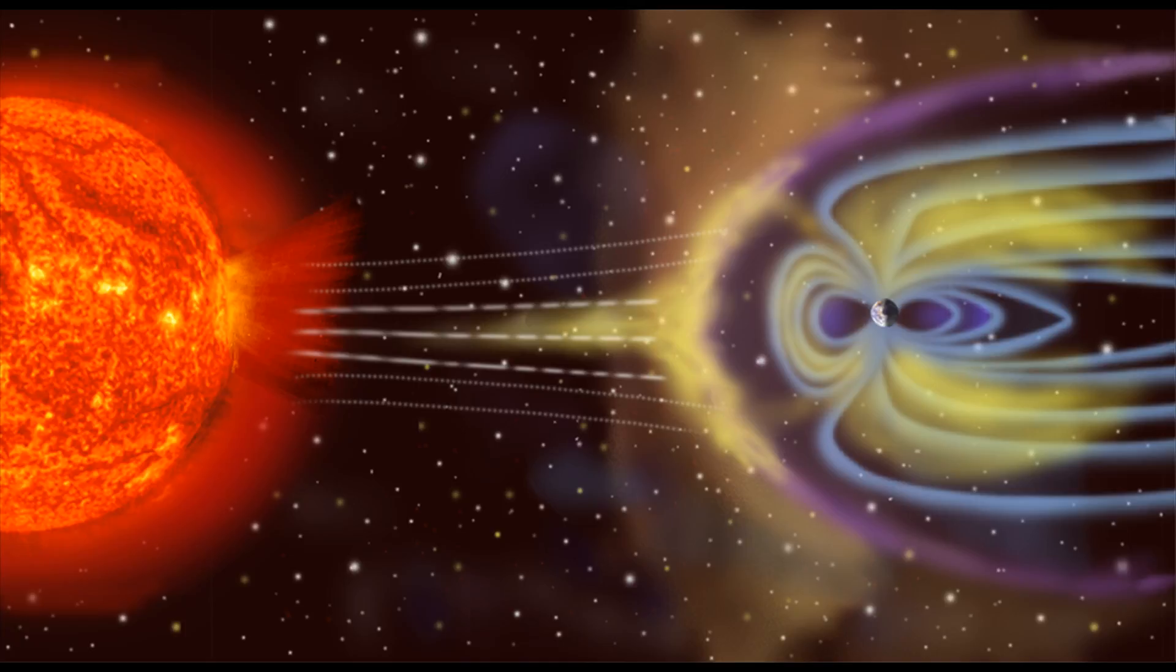While some cosmic rays are generated by the Sun, most originate from beyond the solar system and are thought to be produced by highly energetic events such as exploding stars called supernovae and feeding supermassive black holes called AGNs or active galactic nuclei.